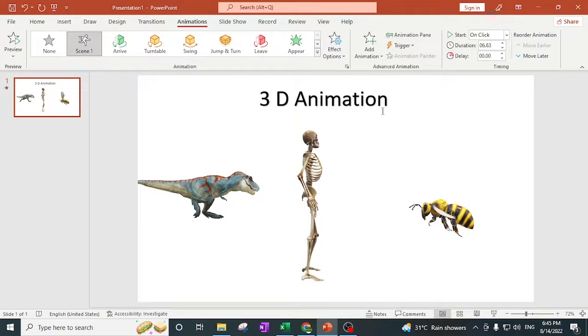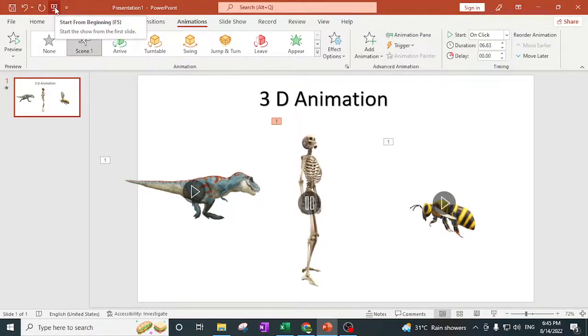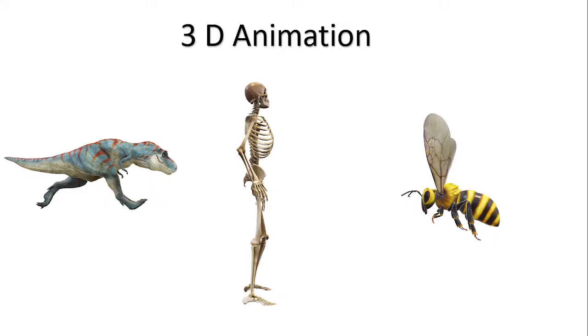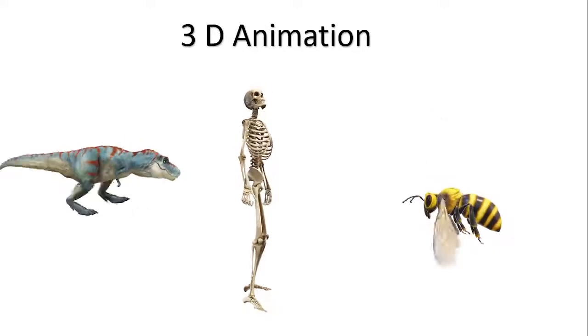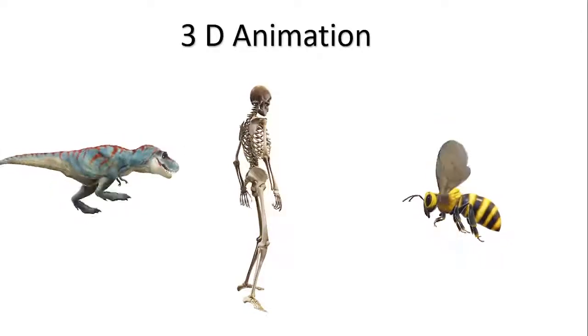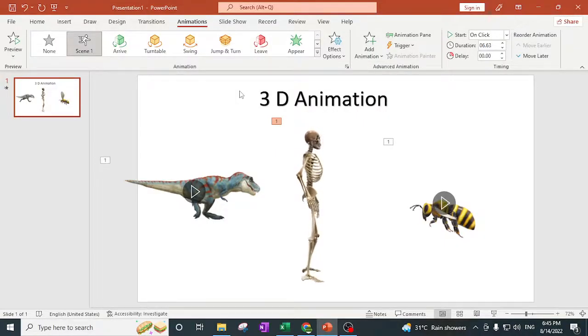Let's check out the PowerPoint slide by opening it in full view mode. Press F5 on your keyboard to see the slide, then press Enter. Now you can see that all three animations are working properly. The slide ends and the animations play as expected.